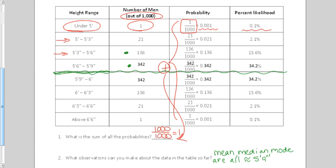What else can we tell? We can tell that this data is pretty symmetrical. I had on both sides, I had 342. On both sides, I had 136. On both sides of the mean, I had 21. So that's another observation I could make is the data was symmetrical.